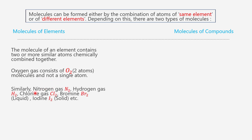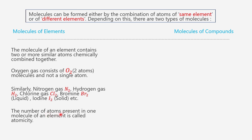Similarly, nitrogen gas is N2, hydrogen gas is H2, chlorine gas is Cl2, bromine is Br2, iodine is I2, and so on. The number of atoms present in one molecule of an element is called atomicity. For example, the atomicity of oxygen is two because one molecule of oxygen contains two atoms of oxygen. The atomicity of hydrogen is also two because one molecule of hydrogen contains two atoms of hydrogen.